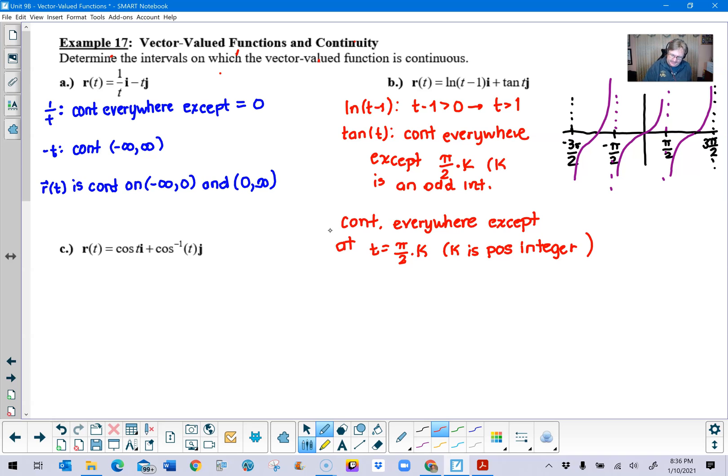And then lastly, we'll take a look at part c here. Cosine t plus inverse cosine t. So if we take a look at this guy, we say that cosine of t, well, we know a little bit about him, right? He's just got a lot of places where he's continuous over the entire number line, negative infinity to infinity.